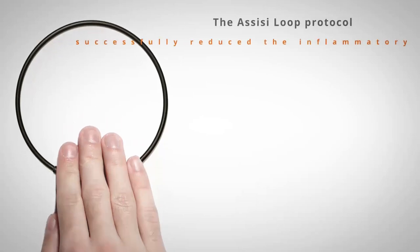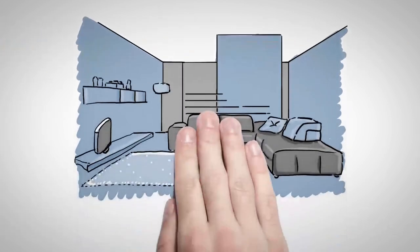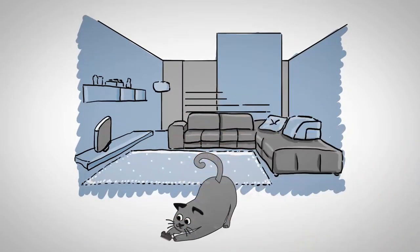The Assisi Loop Protocol successfully reduced the inflammatory response within all of the hyperthermic regions. Clinically, the patient regained movement that had not been observed in years.